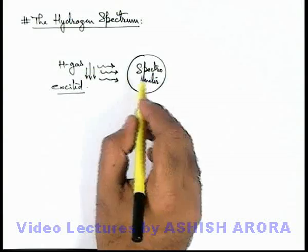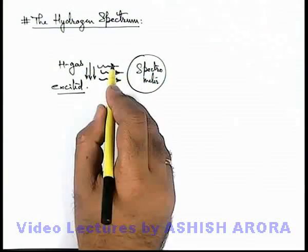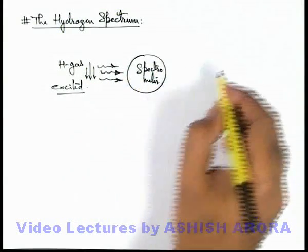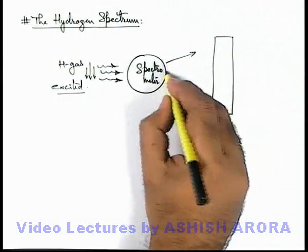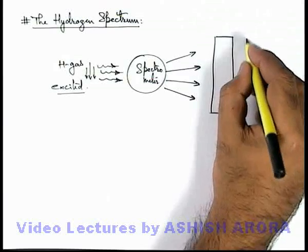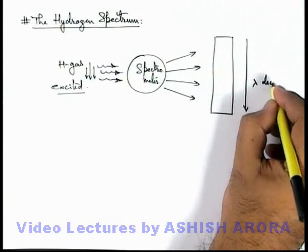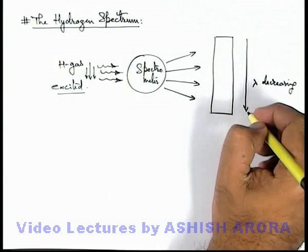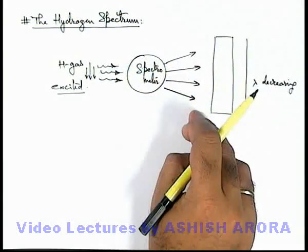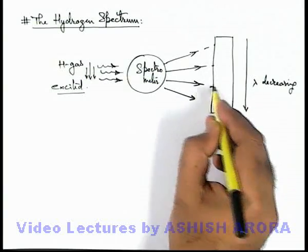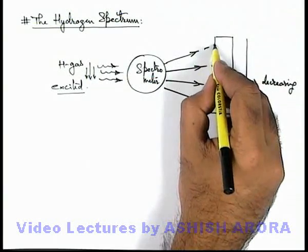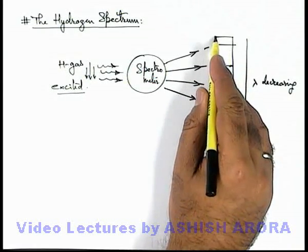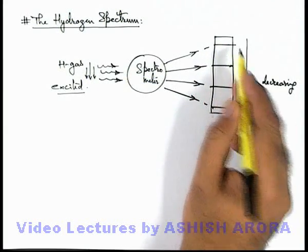In this spectrometer, all these wavelengths which are incident from the hydrogen gas are arranged in increasing or decreasing order, and finally on a photographic plate these wavelengths are allowed to be incident. Corresponding to each wavelength, a spectral line is plotted — a zone where the material of the photographic plate is washed away, and a line is plotted over there which is called a spectral line.